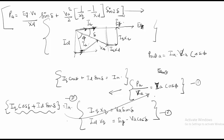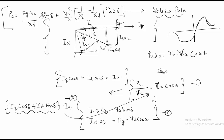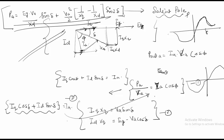This is the final power equation for a salient pole machine. The graph of power versus delta (P-δ curve) is not a pure sinusoidal graph but has some irregularity due to the additional sin(2δ) term. This concludes the derivation of the power equation for a salient pole synchronous machine.